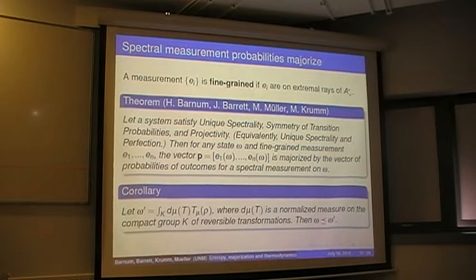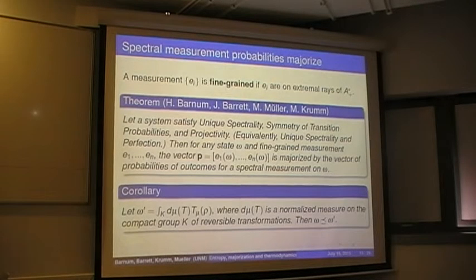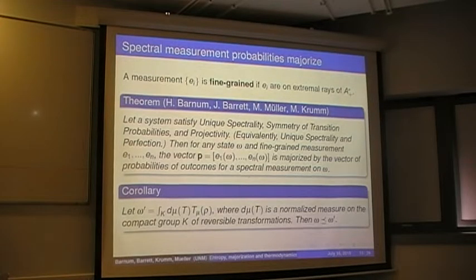So here's the main theorem that I'm going to describe. Let the system satisfy unique spectrality, symmetry of transition probabilities, and projectivity. Or, if you want to bundle some things together, you could just assume unique spectrality and perfection. Because of this theorem by Araki that we rediscovered, it's the same set of assumptions, the equivalent set of assumptions. So then for any state omega, and any fine-grained measurement, E1 through EN, the vector of measurement probabilities is majorized by the vector of probabilities of outcomes for a spectral measurement. So that's where you're actually doing the measurement that distinguishes the distinguishable pure states in the convex decomposition of that system in distribution of pure states. So any measurement outcome probabilities for fine-grained measurements are more mixed, more random, have more entropy in any reasonable sense of entropy than the spectral probabilities. So that's important for having a thermodynamics that works well, at least I believe it's going to be important.